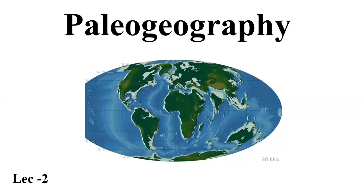Assalamu alaikum. Dear students, today we are going to start a new topic of zoogeography. It is the second lecture of zoogeography. In the first lecture, we described the basic terminologies of zoogeography — what is zoogeography and what are the different branches. Here we will discuss paleogeography and different theories that describe the Earth's history, whether it was a single continent or different small or large continents. Let's start the lecture.